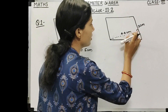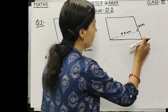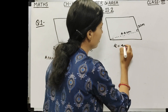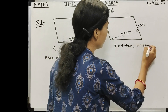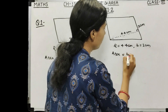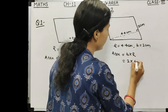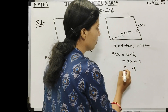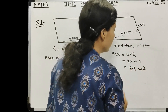For the fifth parallelogram, the perpendicular is dropped from this vertex to the opposite side. Height is 4.4 cm and base is 2 cm. Area = base × height = 2 × 4.4 = 8.8 cm².